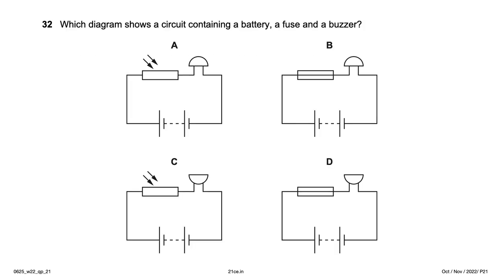Which diagram shows a circuit containing a battery, fuse, and buzzer? Checking the symbols: options A and C are eliminated by incorrect symbols. The buzzer symbol is shown pointing downward — option D is the right answer.